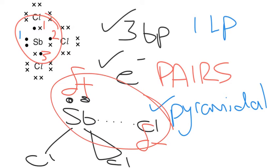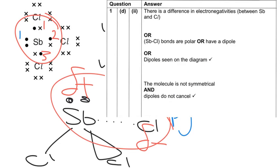The next mark for this was then for saying that the molecule is not symmetrical. Now it looks symmetrical because it looks like a nice pyramid, but in terms of the actual spread of the delta minuses, it's not symmetrical. And you have to include this as part of the answer because then the final mark teamed with that was for saying that the dipoles do not cancel.